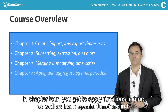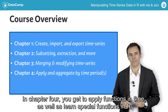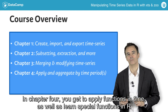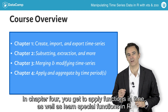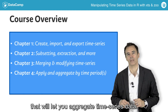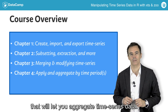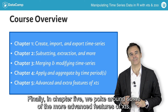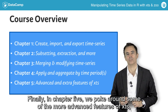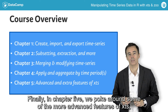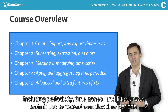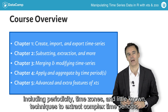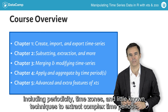In chapter four, we get to apply functions in time, as well as learn special functions in R that let you aggregate time series data. Finally, in chapter five, we poke around some of the more advanced features of XTS, including periodicity, time zones, and little-known techniques to extract complex time periods.